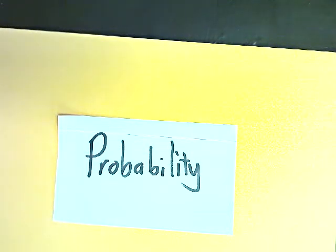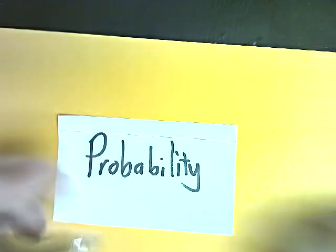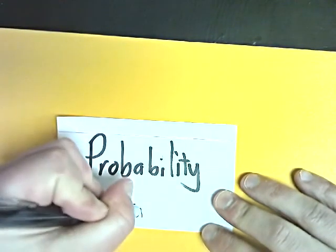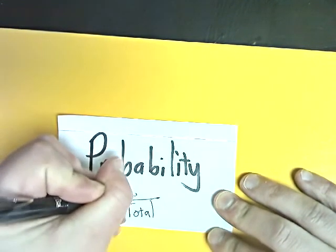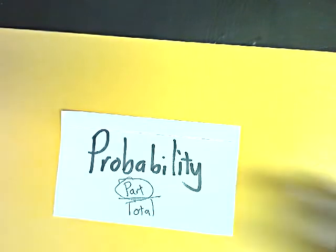The next type in the dirty dozen is probability questions. For probability, the thing that you need to do is find the total and put that on the bottom of the fraction there, and then on top you put the part. The part is whatever they're asking for in the question.